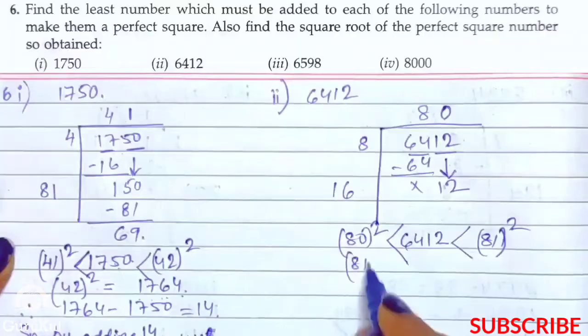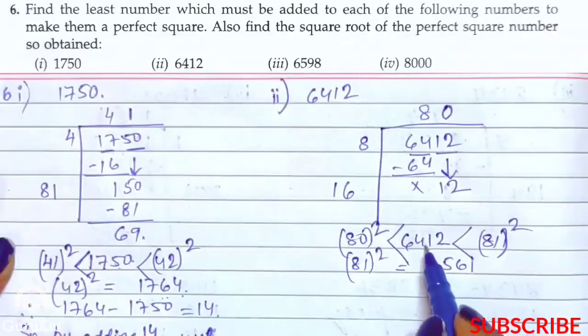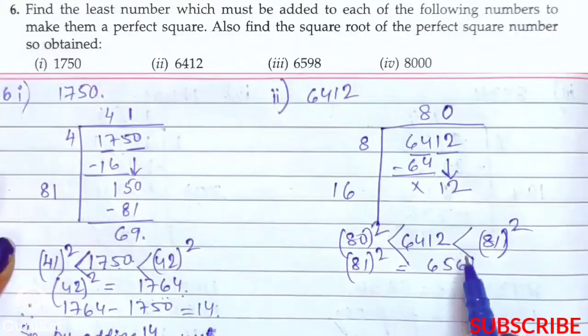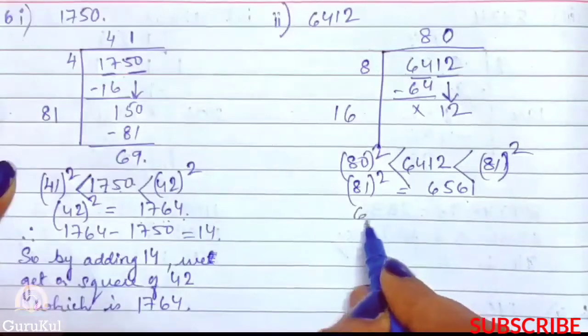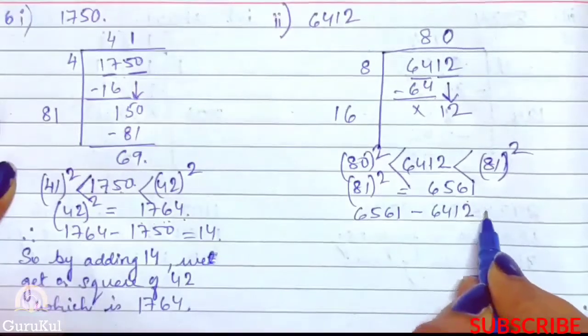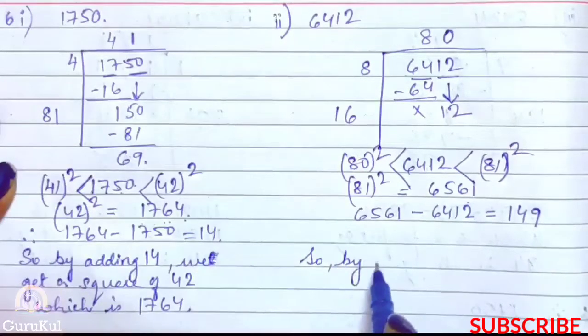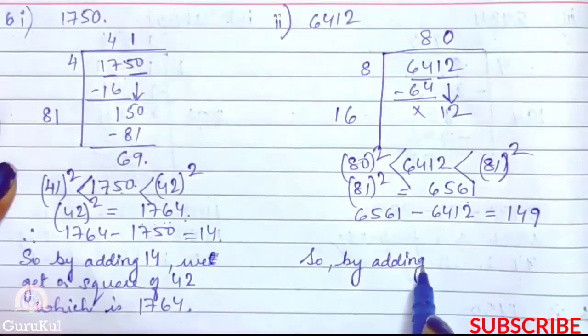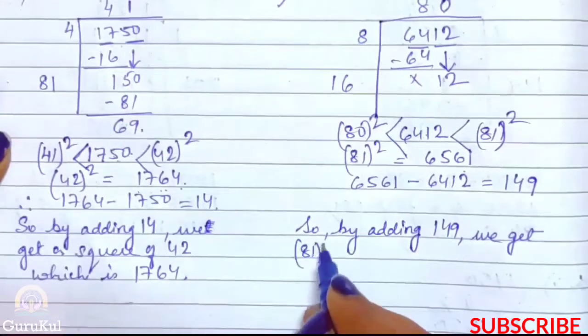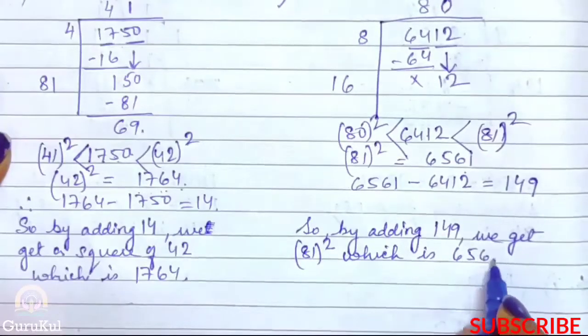So 81 whole square is equal to 6561. To ham loog kitna add karna hoga in order to make 6412 a perfect square? In that case we need to subtract these two. So 6561 minus 6412 gives us 149. So by adding 149 we get 81 square which is 6561. So this is the answer.